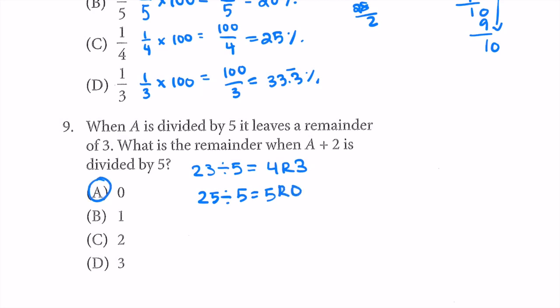Just to explain: we're adding 2, so now we have a remainder of 5. When the remainder equals the number you're dividing by, it means you can just divide by that number one more time — leaving a remainder of 0.